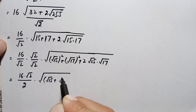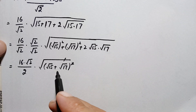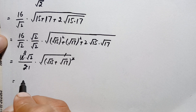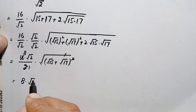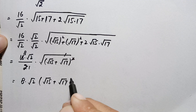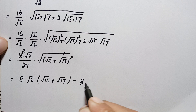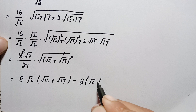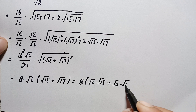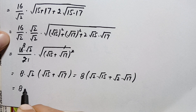This expression becomes 16 times square root of (square root of 15 plus square root of 17) squared. The square and square root cancel, leaving (square root of 15 plus square root of 17). Simplifying: 2 times 1 is 2, and 16 divided by 2 is 8. So this becomes 8 times square root of 2 times (square root of 15 plus square root of 17).